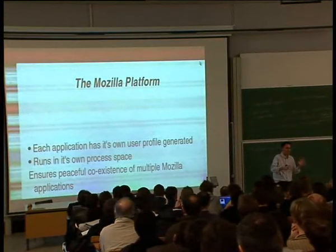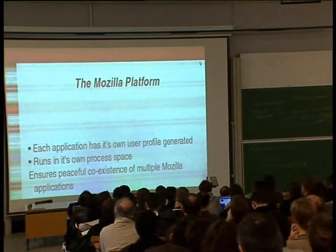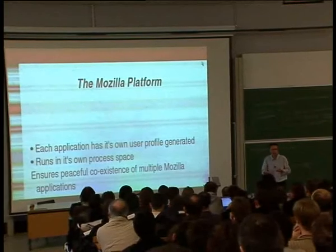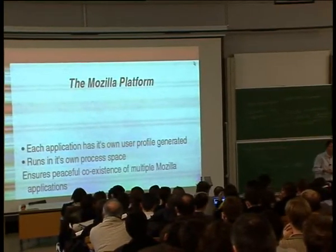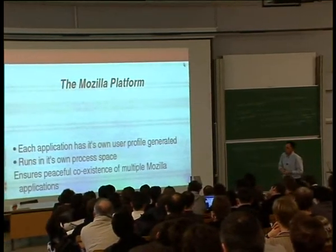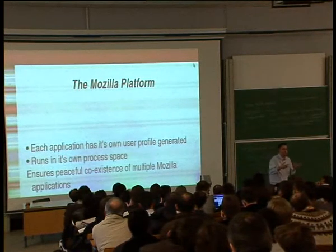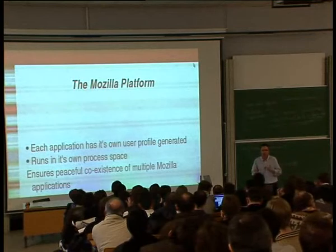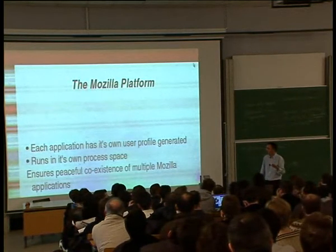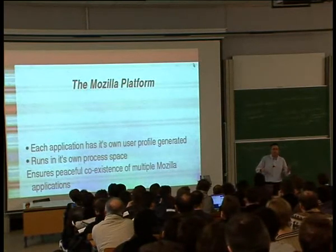Sorry if that seemed abstract. XULRunner enables the Mozilla platform. Many people know Mozilla just as a browser or mail client — you've got Chatzilla, calendaring, and other products. But for many years, especially third-party developers have been taking the codebase and doing imaginative things with it, building many different types of applications. The current incarnation is Firefox and Thunderbird extensions. XULRunner is the next step — each application has its own user profile and runs in its own process space.